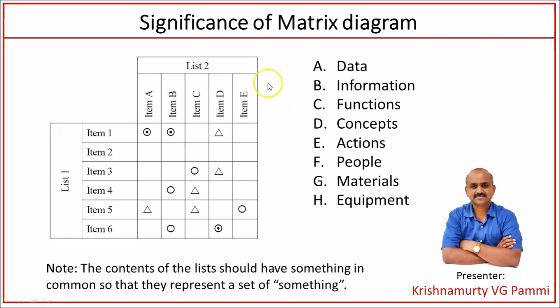On these two lists or groups, you can bring in various data items, information items, functions, concepts, actions, people, material, equipment, and so on. The moment a correlationship exists between these different dimensions, it gives a beautiful meaning.